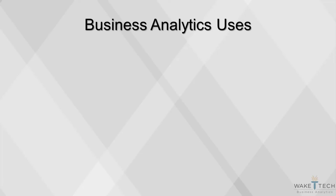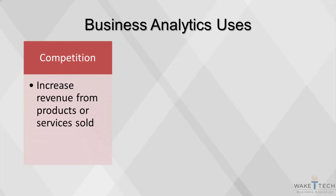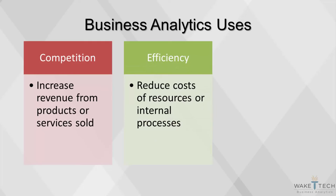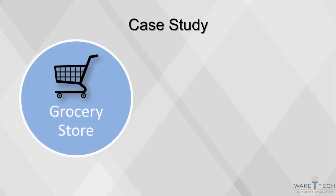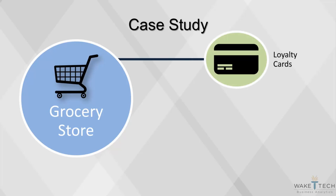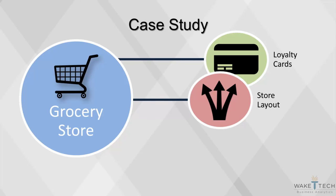Businesses use analytics to gain an edge on their competitors and increase profits. The three main areas in which they do this are: competition, to increase revenue from products or services sold; efficiency, to reduce the cost of resources or internal processes; and customer satisfaction, to improve the customer experience and encourage customer loyalty. Here's a case study as an example. Loyalty cards are used by grocery stores to uniquely identify their customers. By requiring a loyalty card to obtain special discounts, the grocer can isolate habits of each customer and provide customized promotions to increase spending. When a customer stops frequenting the store, the grocer can mail coupons with aggressive offers. The layout of a grocery store is constantly being changed to maximize customer spending — this is why the milk section is always on the opposite side of the produce section, so customers have to traverse past every aisle to get to the two most commonly bought items.